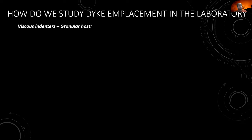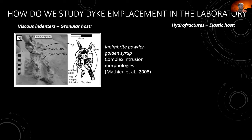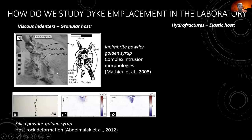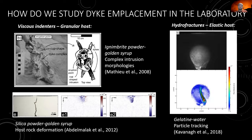In the laboratory we study dyke emplacement through two types of models: a viscous indenter model using a granular host material and a viscous fluid, or a hydrofracture type model with an elastic host and either a Newtonian or non-Newtonian fluid. Examples of viscous indenters include setups where complex intrusion morphologies are examined — ignimbrite powder with golden syrup injected into it creates dyke-like structures, sill bodies, cup structures, and saucer-shaped sill-type bodies. Digital image correlation can also track how different particles move in the host rock during the experiment.